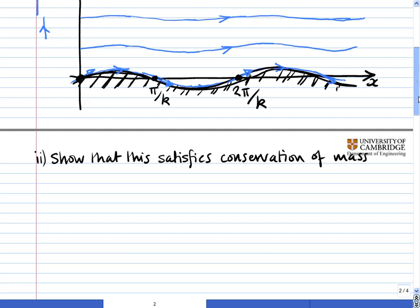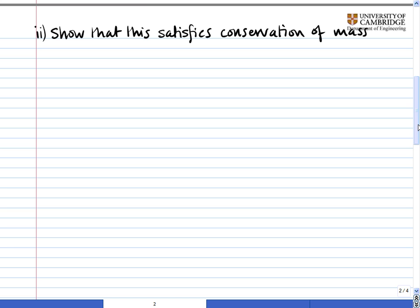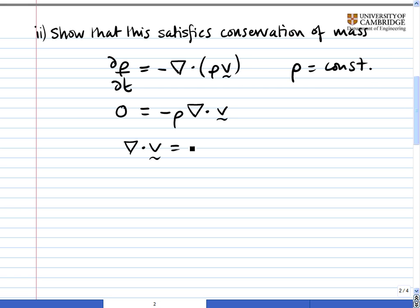Now we have to show that this flow satisfies the conservation of mass. The conservation of mass written in vector form is d rho dt equals minus the divergence of rho v, where v is a vector. Now we're told that the flow is incompressible, which means that rho is a constant. This means that this term simplifies to 0 equals minus rho times the divergence of v. And because rho is a constant, this means simply that the divergence of v is equal to zero.